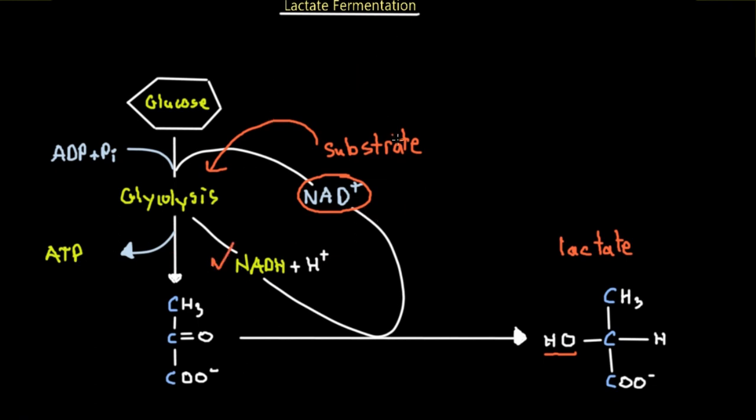So if NAD+ is continuously available, we are continuously going to undergo glycolysis. And glycolysis produces two ATP for us. So it's extremely helpful because then the cell is not completely deprived of ATP.